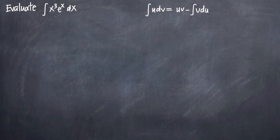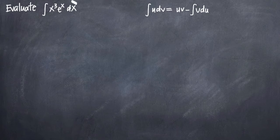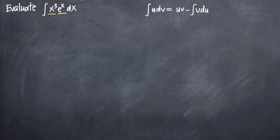In this particular problem, we've been asked to evaluate the integral of x cubed times e to the x dx. The first thing that we should recognize is that we have essentially two functions inside of our integral here. We have x cubed and we have e to the x, and they are multiplied together.